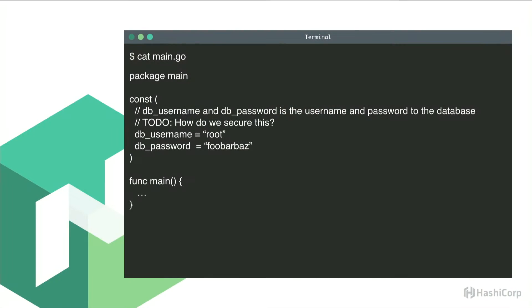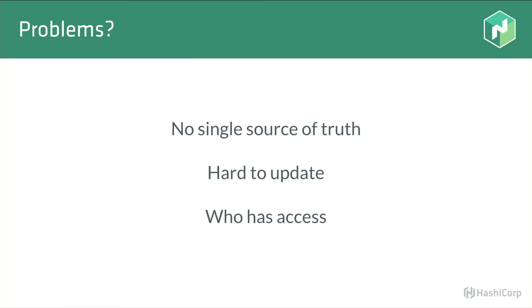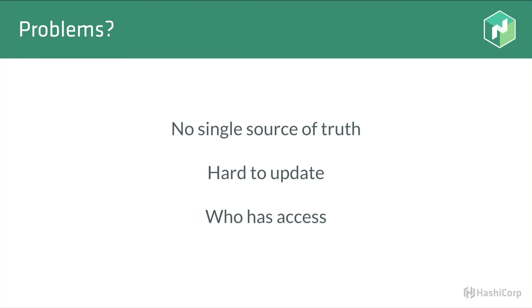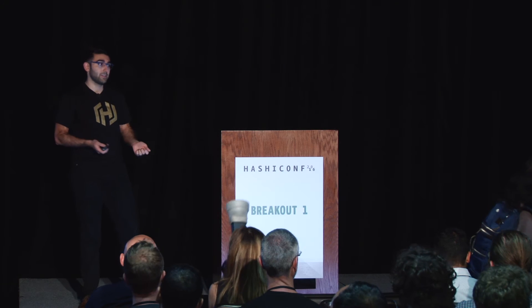The most naive way to solve this problem is you just write the secret in your application. There are a lot of issues with this. One of the main ones is there's no single source of truth — your secret is defined both in the source code and in the database, which makes it incredibly hard to update in the case that you need to revoke access because of a compromise. Now you have to recompile your source and send it to all the machines running it. And when you have a compromise, any additional difficulty to revoke that secret is really bad.